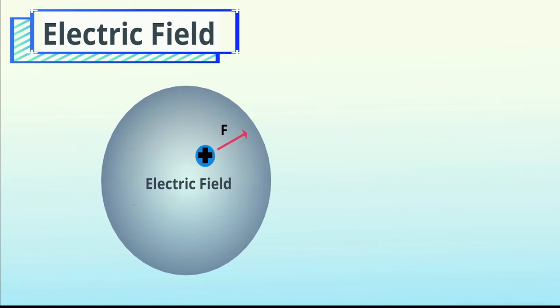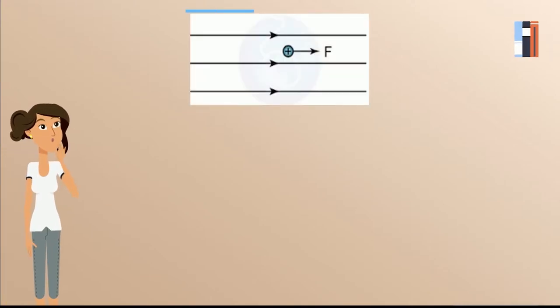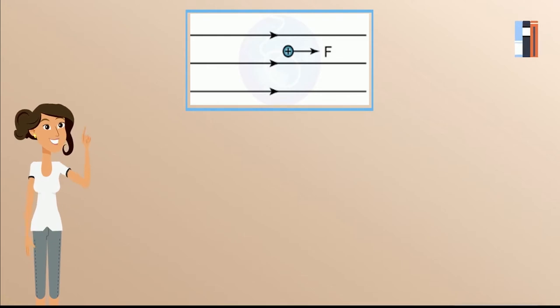An electric field is a region in which an electric charged particle experiences an electric force. Electric field is represented by a number of lines with arrows, called electric lines of force or electric field lines. The direction of the field at a point is defined by the direction of the electric force exerted on a positive test charge placed on that point.